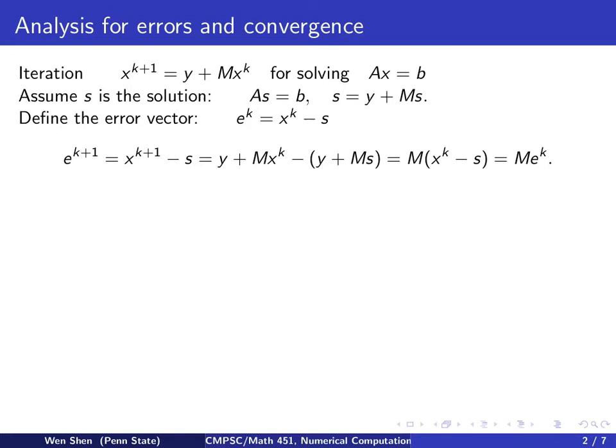Then we see y cancels the y, and we can take out M as a common factor. Then we have M times x^k minus S, and we recognize that that's the error at step k, so this is M times e^k. So we see the error at step k multiplied by the coefficient matrix gives us the error at step k plus 1.